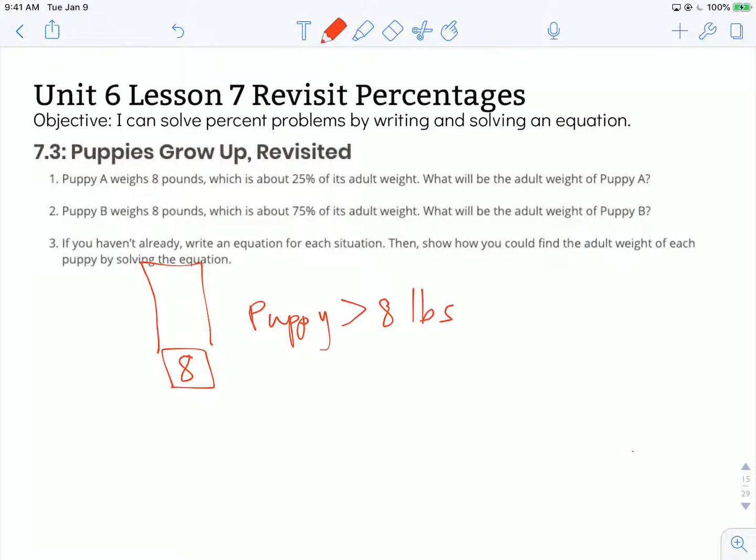But let's go ahead and meet our objective and write and solve an equation for this. So I'm going to pick out some words that can easily be translated into an equation. So I have 8 pounds is 25% of its adult weight.